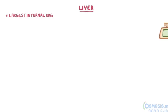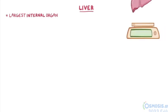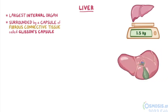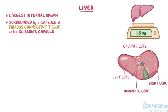The liver is the largest internal organ in the body, and it weighs about 1.5 kg. It's surrounded by a capsule of fibrous connective tissue called Glisson's capsule. If we look at the liver from an inferior view, which is a view from the bottom of the liver, we can see that it is divided into a large left lobe and right lobe, as well as two smaller lobes called the quadrate and caudate lobes.